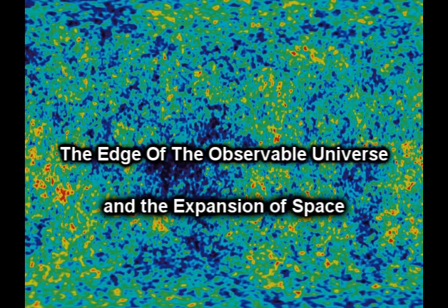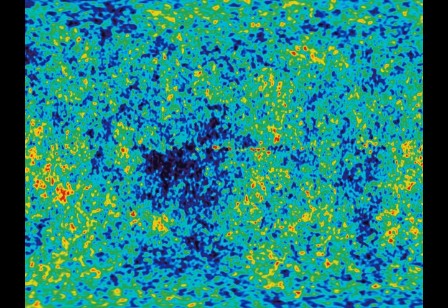The universe was filled with a plasma of electrons, photons, and nuclei. The different colors represent slightly different temperatures in this plasma. While this picture gives the impression of the universe being chaotic, the variation from the warmest part, shown in red, to the coolest part, shown in blue, is less than one part in 10,000. Everywhere in the universe, light started traveling freely at very nearly the same time.